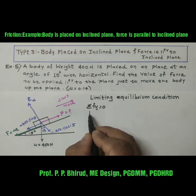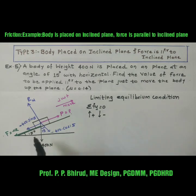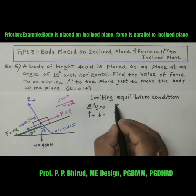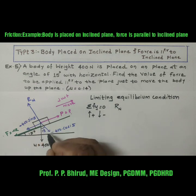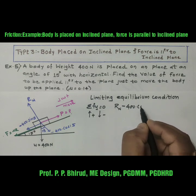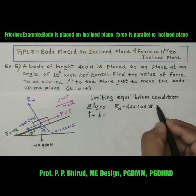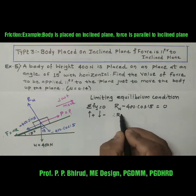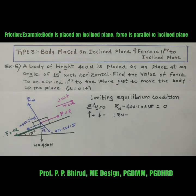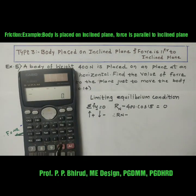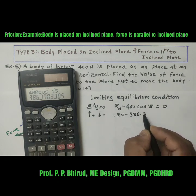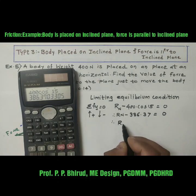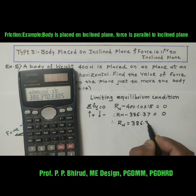For that, we will use the sign convention: upward is positive, downward is negative. The normal reaction Rn is in the upward direction, so plus Rn. The component minus 400 cos 15 is in the downward direction, so Rn minus 400 cos 15 equals 0. Therefore, normal reaction Rn equals 386.37 Newton.